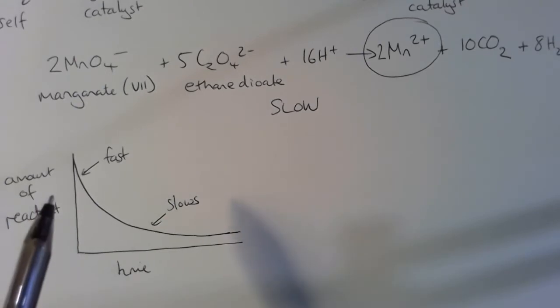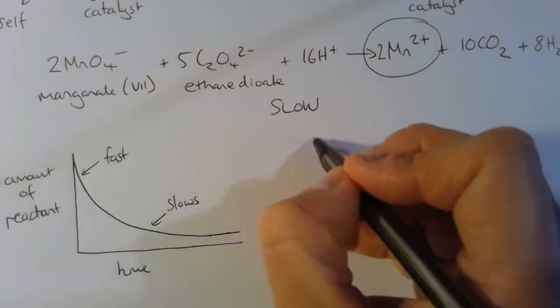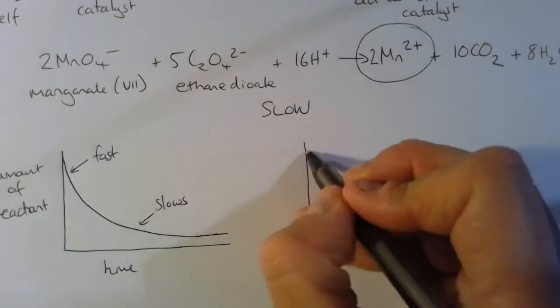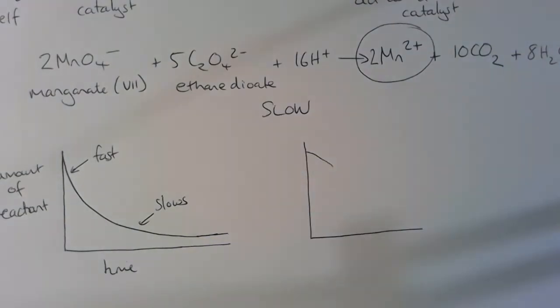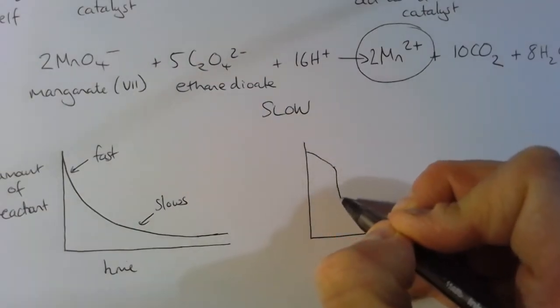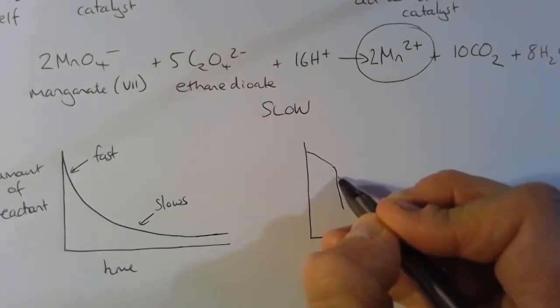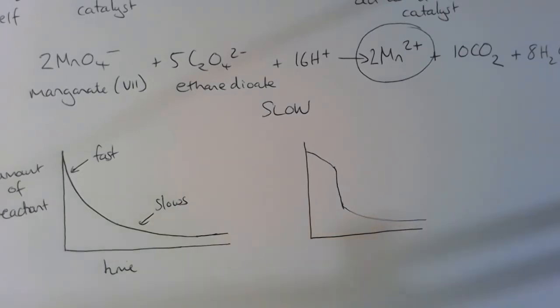What we see with this graph here is a slow reaction, so the rate of decrease is quite small to start with because it's slower than a reaction here. But then suddenly the reaction becomes much faster, and the amount of product falls off much faster, and then again it will level off.